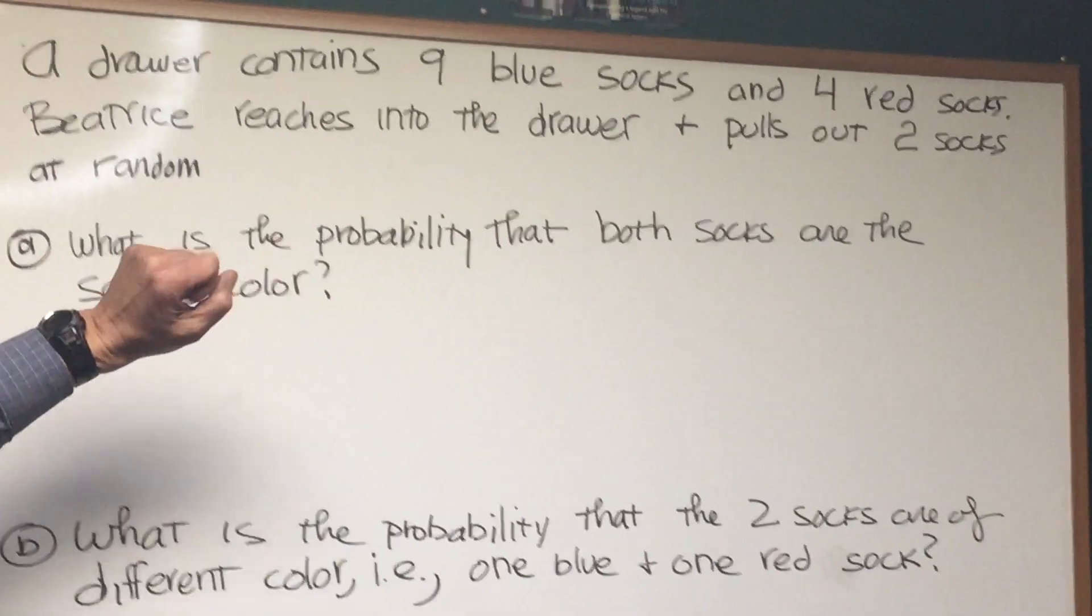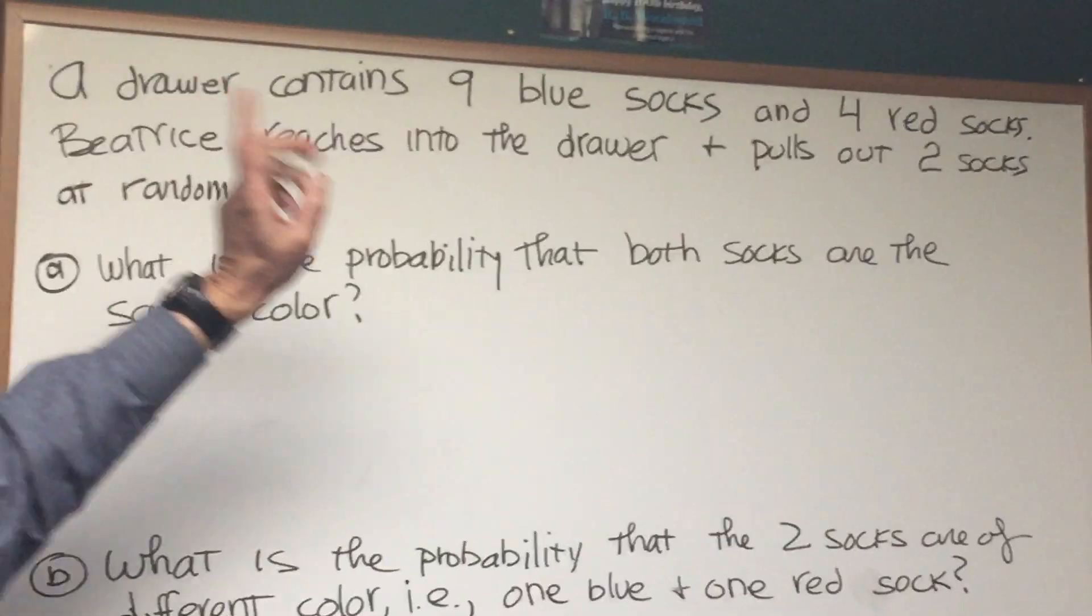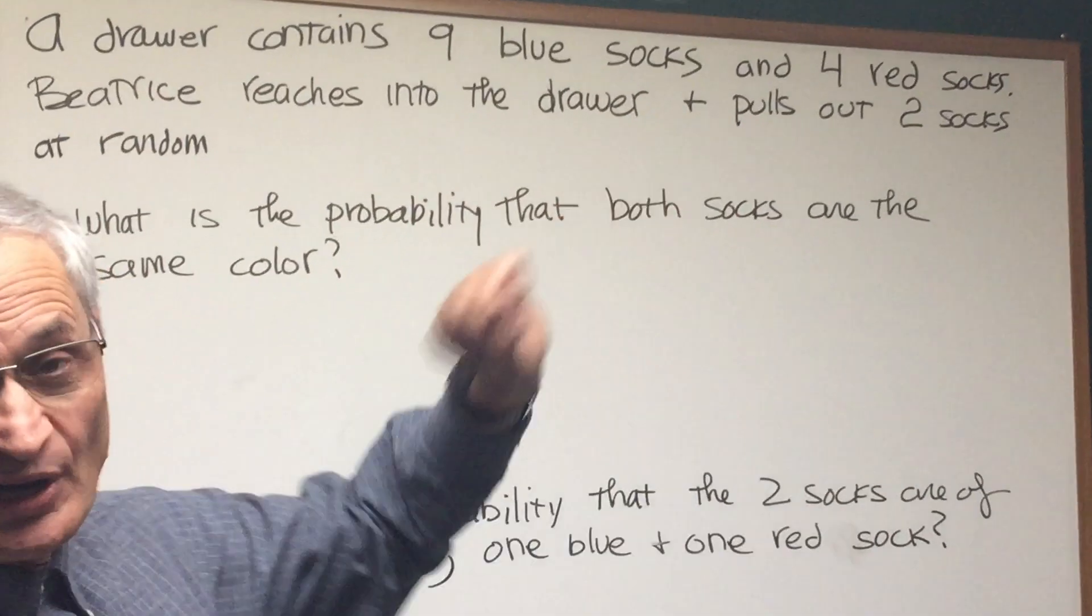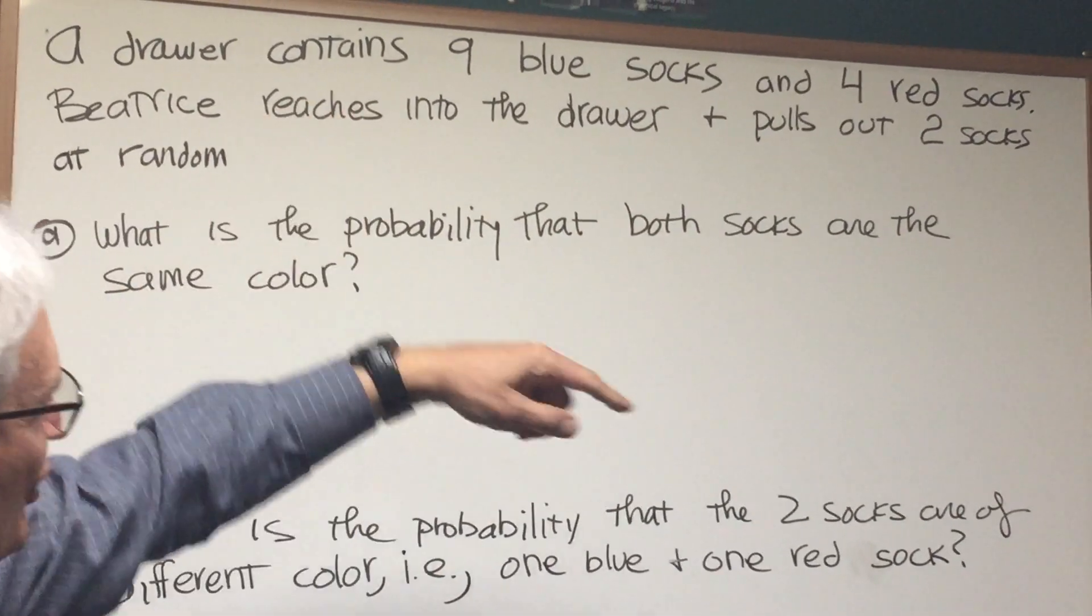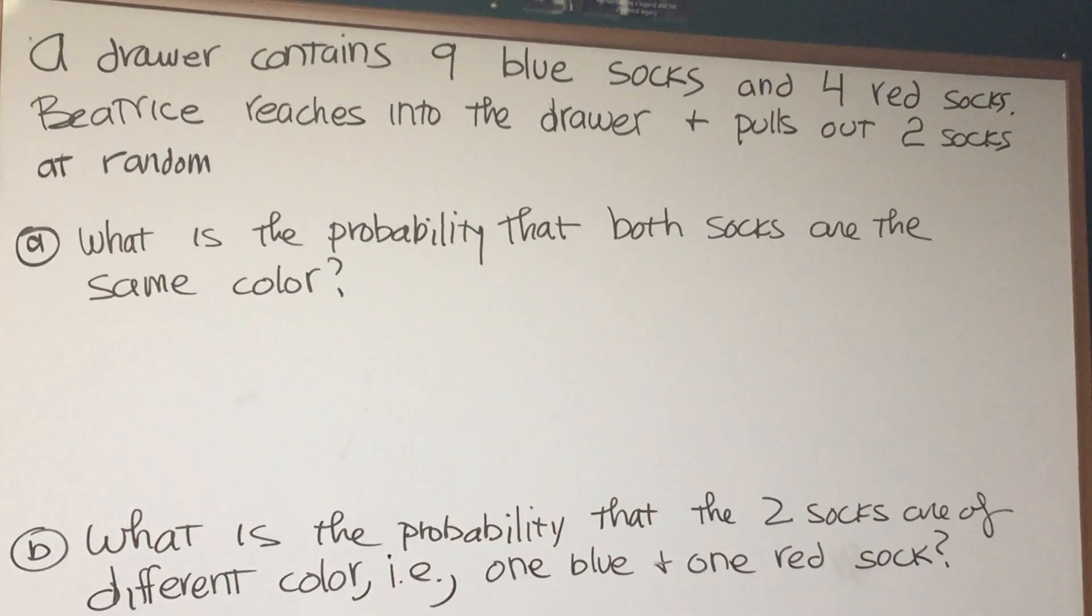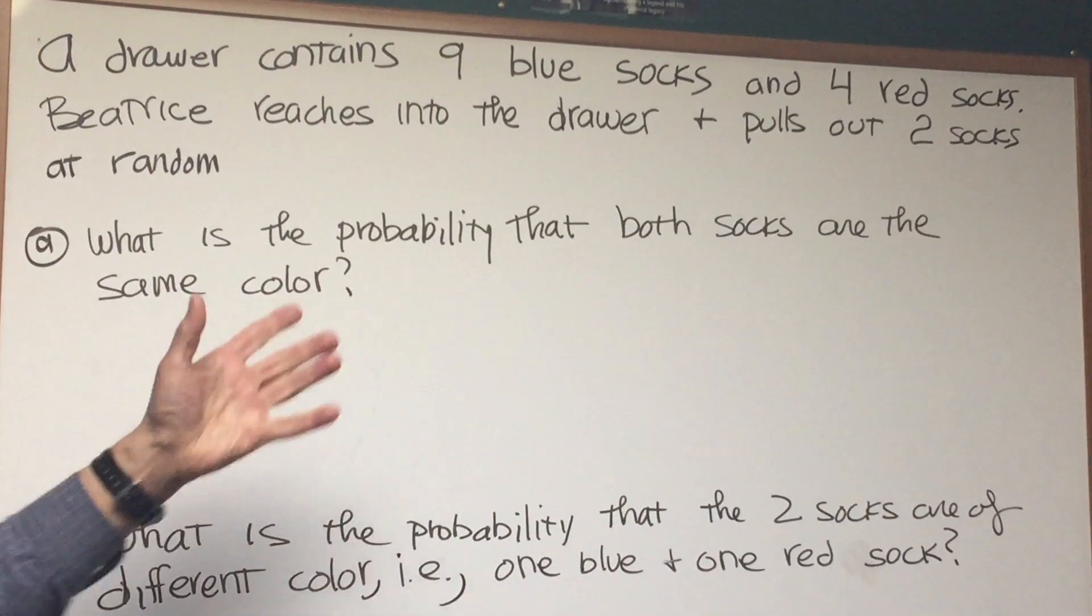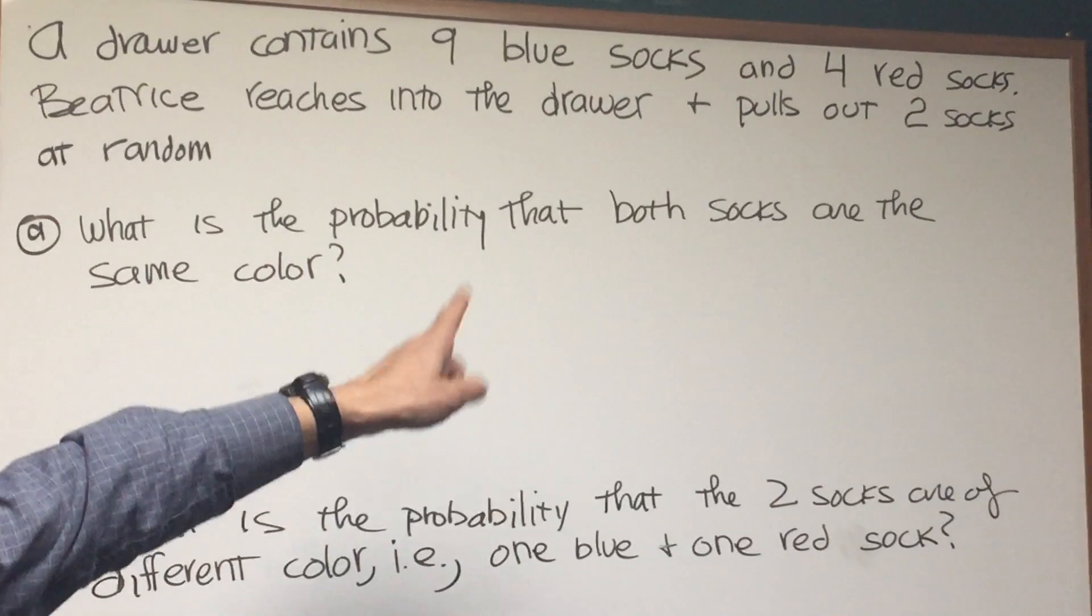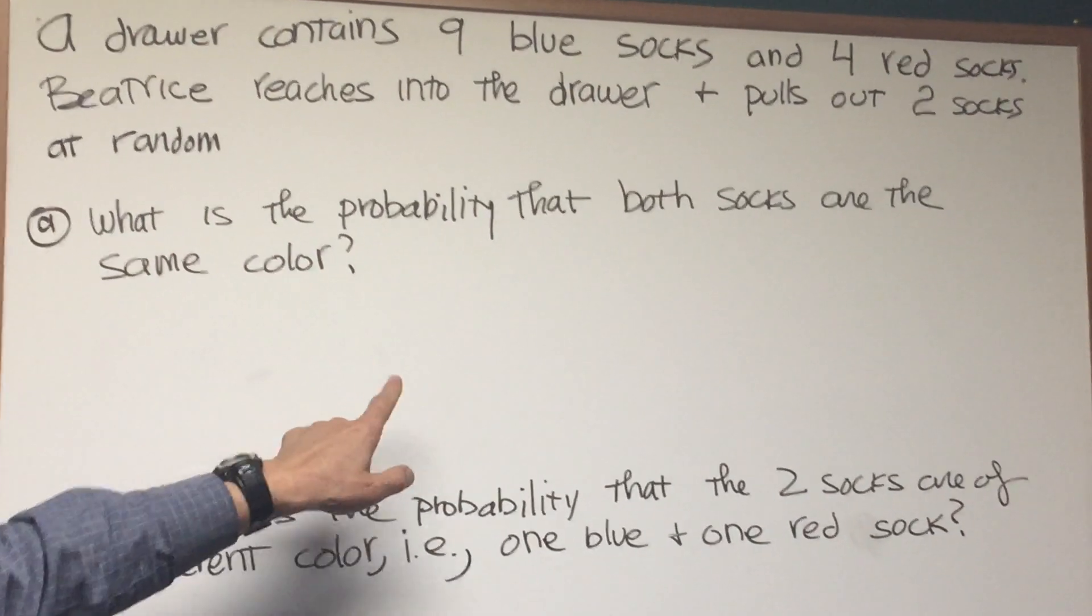Let's first read the problem together. A drawer contains nine blue socks and four red socks. Beatrice reaches into the drawer and picks out two socks at random. Okay, first question, what is the probability that both socks are the same color?